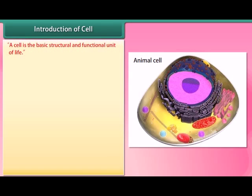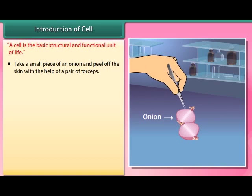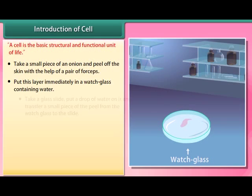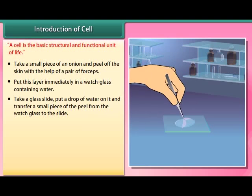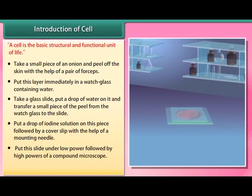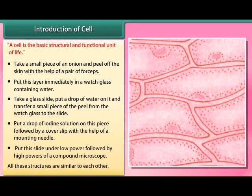A cell is the basic structural and functional unit of life. To observe cells, take a small piece of an onion and peel off the skin with forceps. Put the layer in a watch glass containing water. Transfer a small piece of the peel to a glass slide with a drop of water, add a drop of iodine solution, and cover with a cover slip. Observe under low and then high power of a compound microscope — all the structures visible are similar to each other.